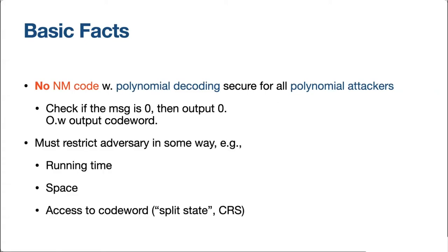There have been many suggestions for how to limit the adversary. We can limit its running time to be slower than decoding, require it to have small space, or limit its access to the codeword. For instance, we can allow an untamperable common reference string, or limit the way the adversary accesses the codeword — not the amount it can modify, but how it can modify. One useful notion here is split-state adversaries.